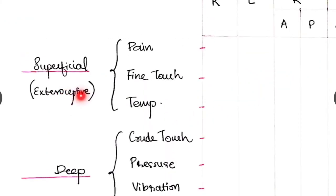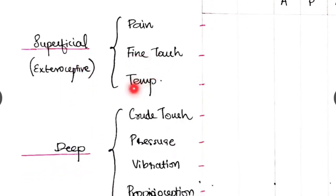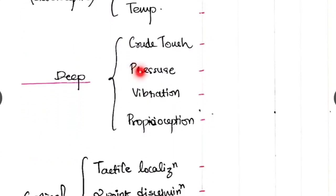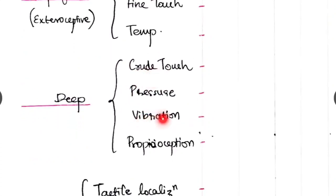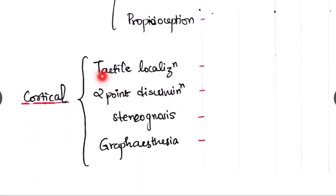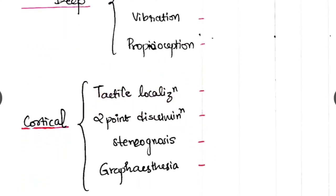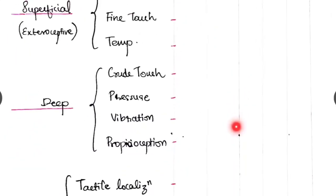Regarding the superficial sensations, it is the exteroceptive sensation. The pain, fine touch and temperature checked. Deep sensations: the crude touch, pressure, vibration and proprioception are checked.